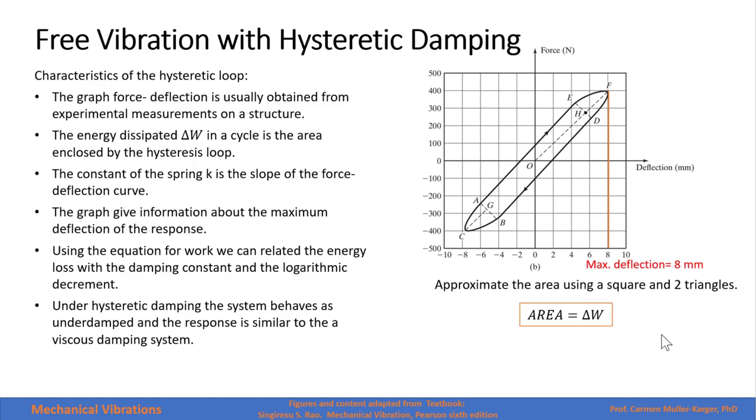The constant of the spring is the slope of the deflection curve. So that slope will be calculated from the slope of the line from O to F. The graph gives also information about the maximum deflection of the response, and this will be here, the point F.